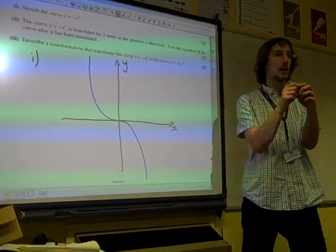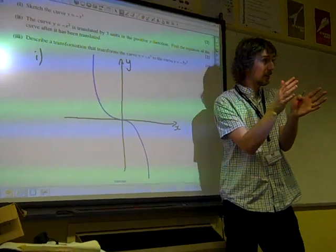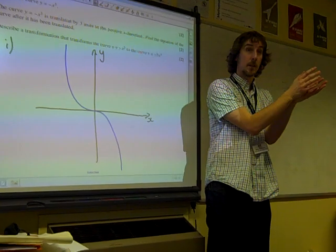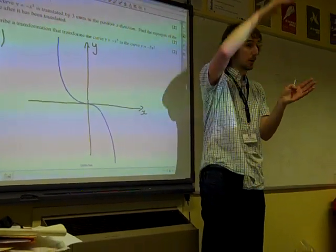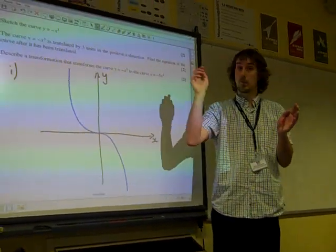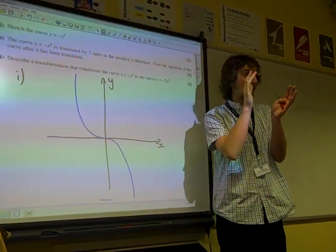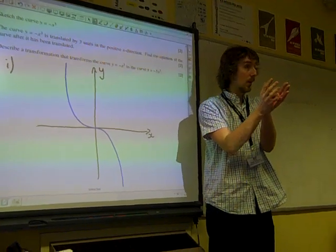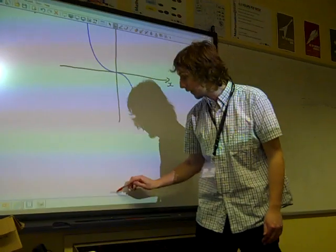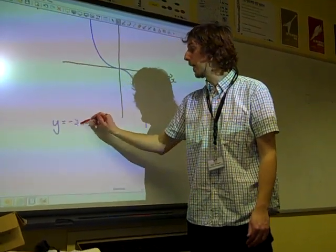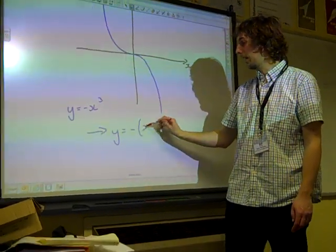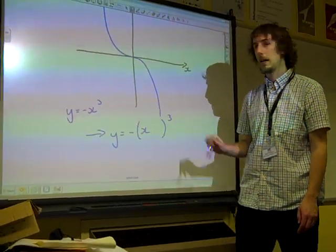Right, this is that thing. If it's translated in the y direction, then you have the minus x cubed bit, and then if you add a number it goes up, and if you subtract a number it goes down. In the x direction, the translation thing has to happen before anything else. So as soon as we read the x direction in there, we know that the graph is going to go from being minus x cubed to something with a bracket in it.